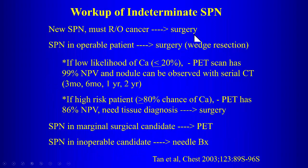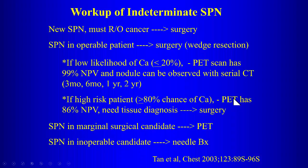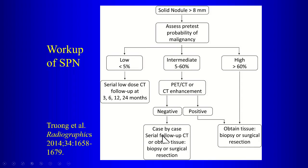The workup for an indeterminate solitary pulmonary nodule isn't written in stone — these are recommendations. If there's a definitely new nodule, high index of suspicion for cancer is warranted. For an operable patient, wedge resection can evaluate the nodule. Pretest probability also affects the predictive value of PET-CT. For low likelihood of cancer, a negative PET has 99% negative predictive value; for a high-risk patient with high pretest probability, a negative PET has only 86% negative predictive value.